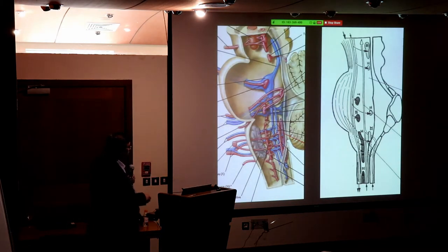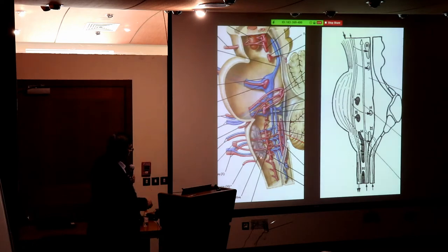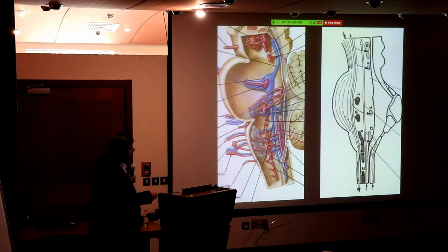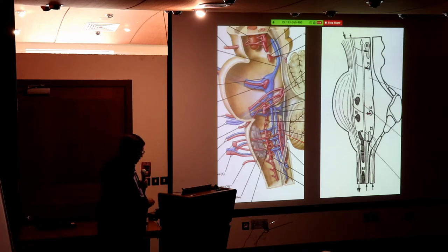The tracts within the brain stem look complex, but let's make it easy. The longer tracts travel in the anterior part of the brain stem — whether midbrain, pons, or medulla — while the nuclei of the cranial nerves lie toward the back. In the posterior brain stem you find cranial nerve nuclei; in the anterior part you find the long tracts.